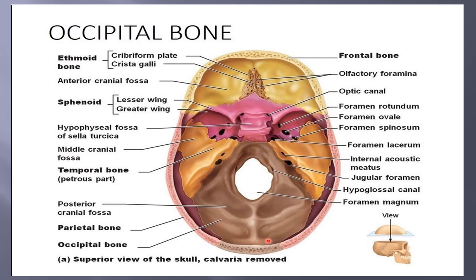The occipital bone is the posterior part of the cranial bone, forming the posterior wall and base of the skull. It has two parts: the squamous part and the basilar part. The occipital bone has the large hole called the foramen magnum through which the spinal cord passes. The squamous part lies posterior to the foramen magnum and the basilar part lies anterior to it. You can see the hypoglossal canal and the jugular foramen.